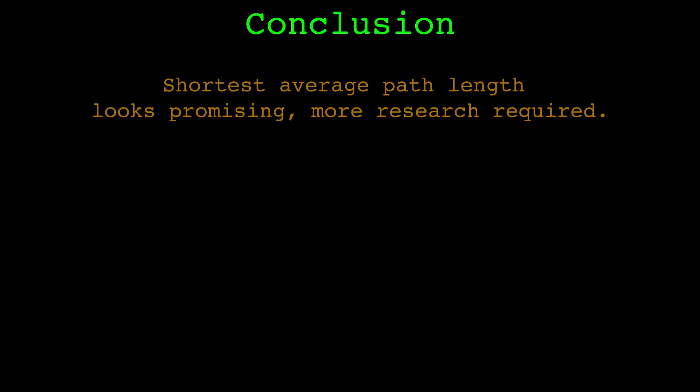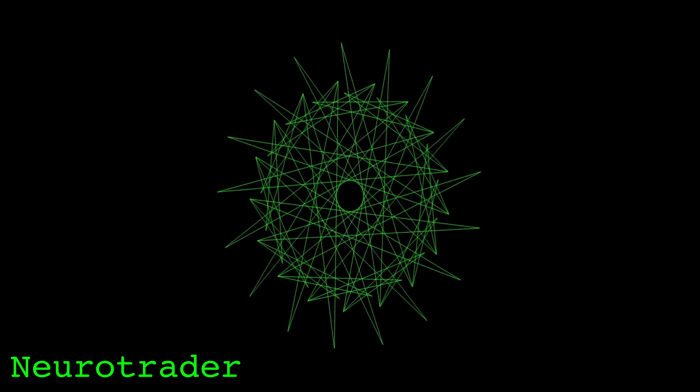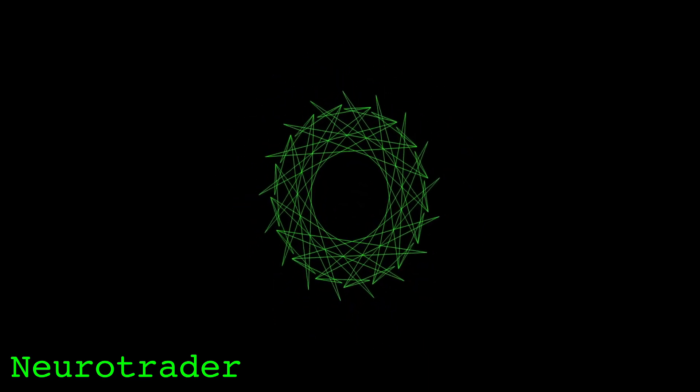The average shortest path length indicator shows promise, but that's only one of hundreds of graph metrics that have been proposed. This stuff is fairly new to me, I've been reading about visibility graphs for a while now, and I'm now getting around to experimenting with them. Papers proposing new ideas get published regularly and I have quite a few I want to implement. Anyways, that's it for this one. Thank you for watching.